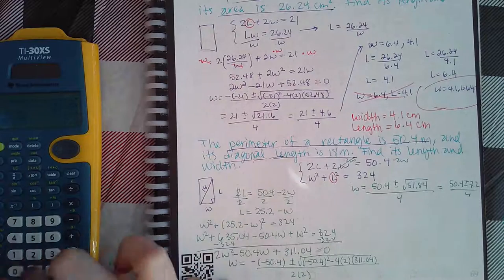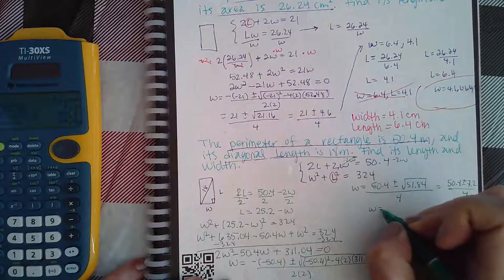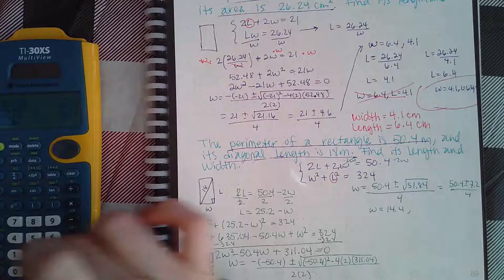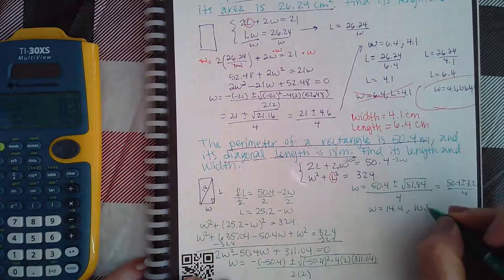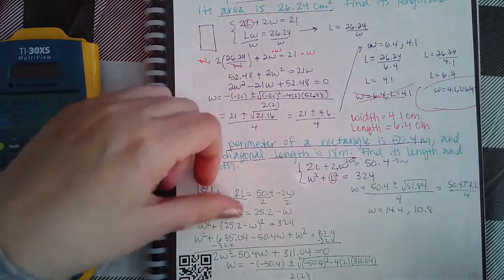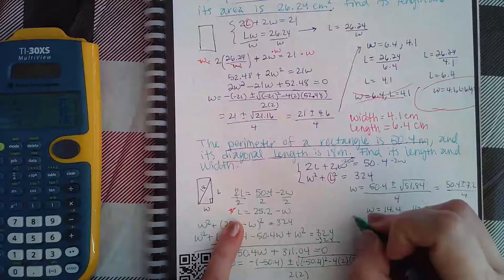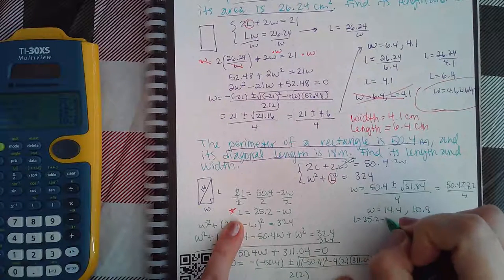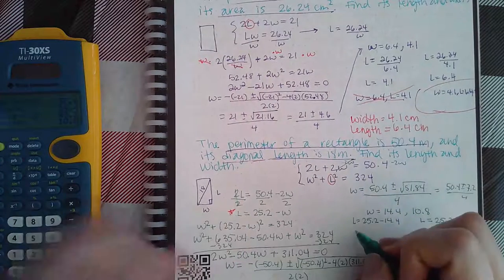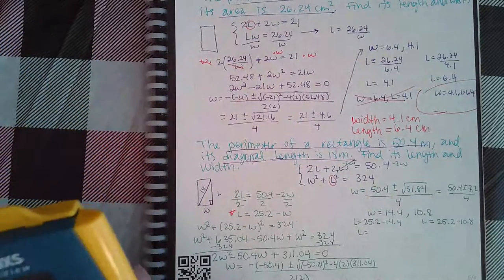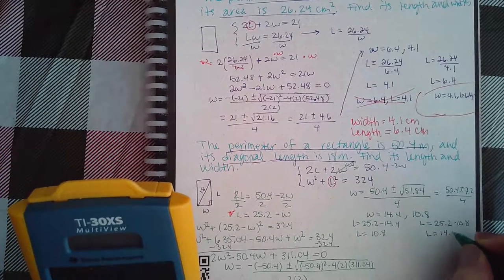Gives me 51.84. What's the square root of that? It is 7.2 over 4. So I have 50.4 plus 7.2 divided by 4, which is 14.4, and then I have 50.4 minus 7.2 divided by 4, which is 10.8. So let's find the lengths that correspond to this. I am going to use this equation here where the L is already by itself, so I get L equals 25.2 minus 14.4 or L equals 25.2 minus 10.8. Here I get 10.8 and here I get 14.4.